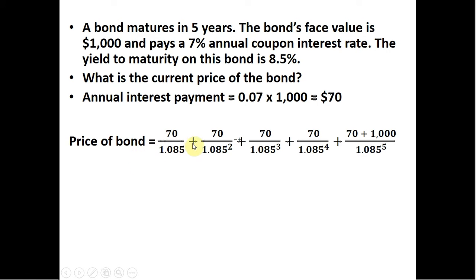To calculate the price of the bond, I'm going to use this setup right here. We have the coupon interest payment divided by 1 plus the yield to maturity. So 1 plus 0.085 is just 1.085.